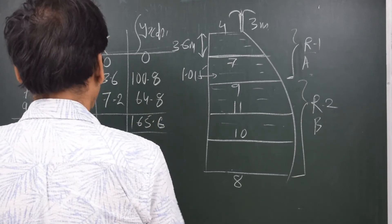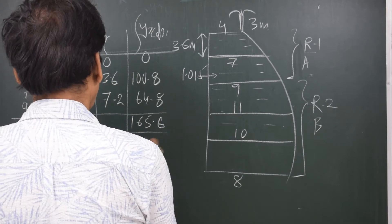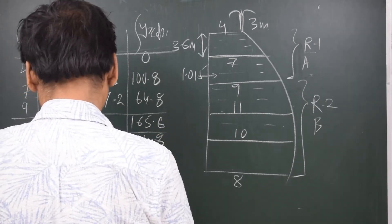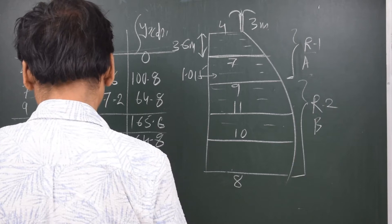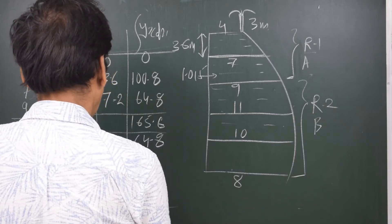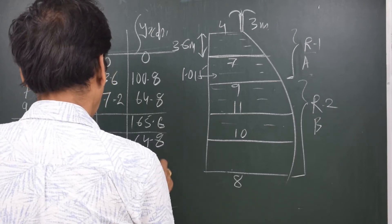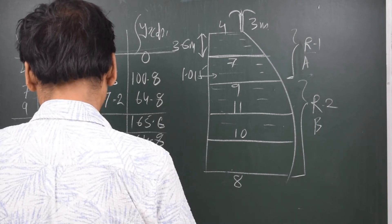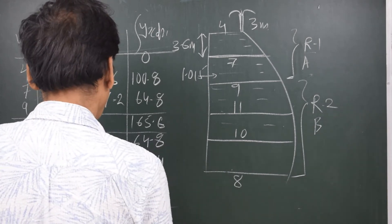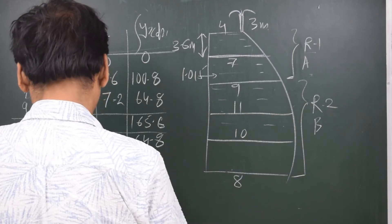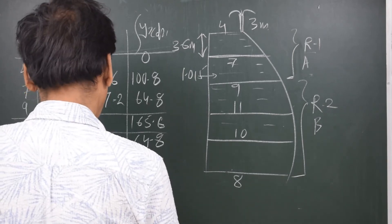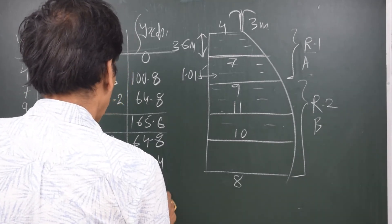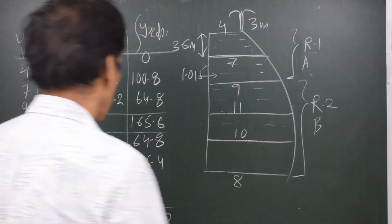Continuing: nine times 7.2 is 64.8. Thirty-three times 10.8 gives 356.4. Fourteen point four times thirty gives 432. And eighteen times eight gives 144. The total for the rule two moment column is 997.2.